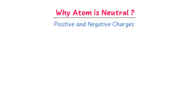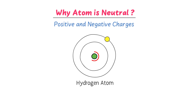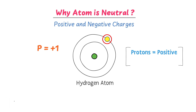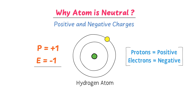Consider an atom of hydrogen. If you count the number of protons in a hydrogen atom, you will get one proton, so I write p = +1. Remember that protons are positively charged particles. If you count the number of electrons, you will get only one electron, so I write electron = -1. Remember that electrons are negatively charged particles. Now, +1 and -1 cancel out, so the net charge becomes zero — the positive and negative charged particles neutralize themselves in a hydrogen atom.